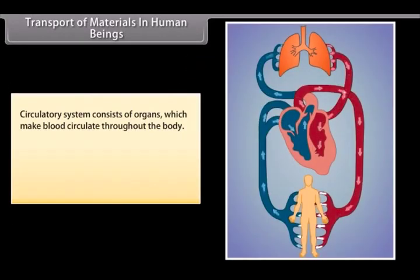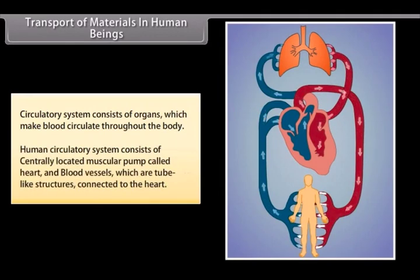Circulatory system consists of organs which make blood circulate throughout the body. Human circulatory system consists of centrally located muscular pump called heart and blood vessels which are tube-like structures connected to the heart.